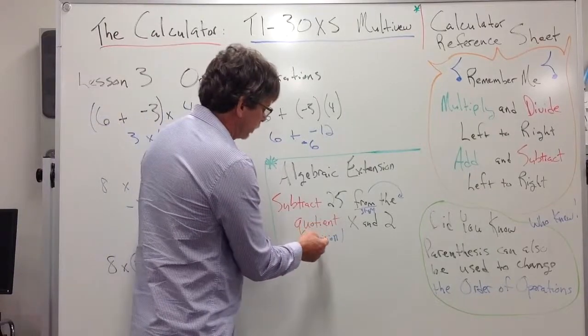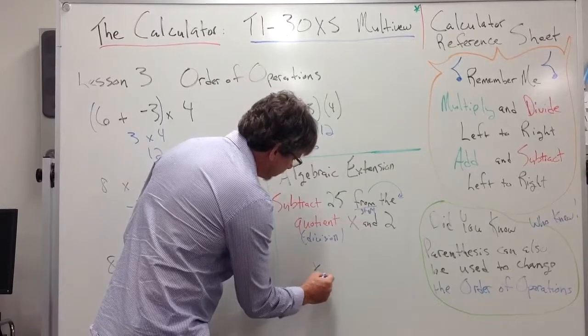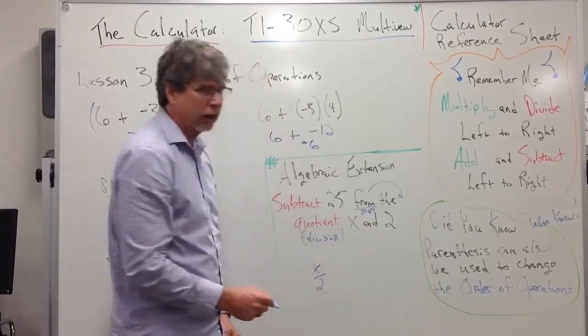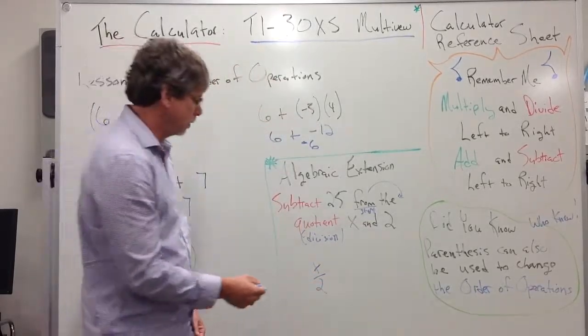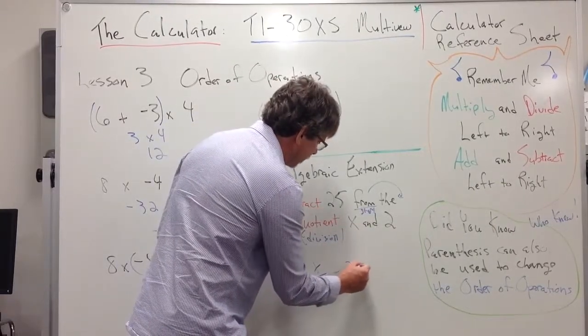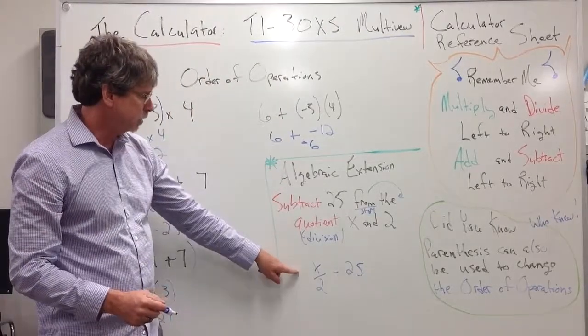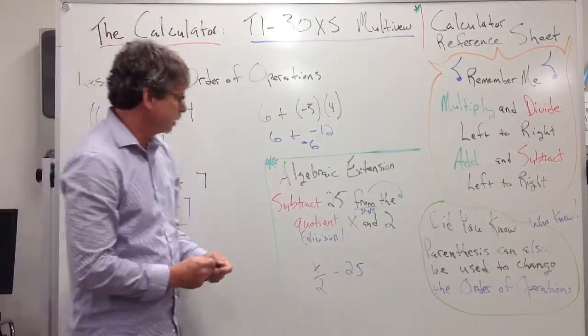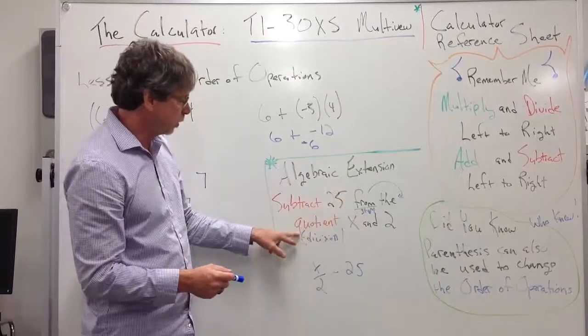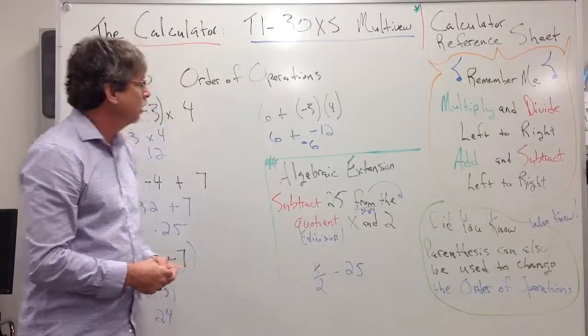So when it says quotient of X and 2, that just means X divided by 2. And a lot of times in algebra, we use a fraction bar, it's a division symbol. So X divided by 2, and then we're going to subtract 25 from that. So if I have to change this into an expression, notice the from is a cue that we actually got to start with a quotient, and subtraction actually comes second.